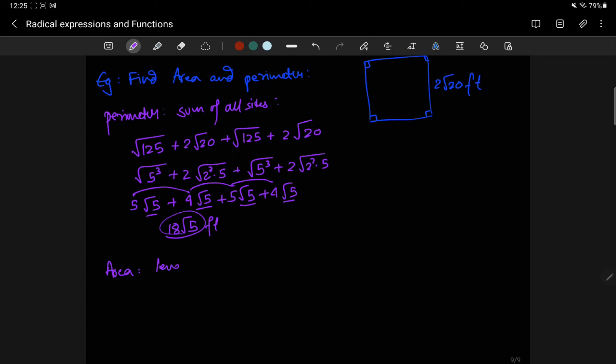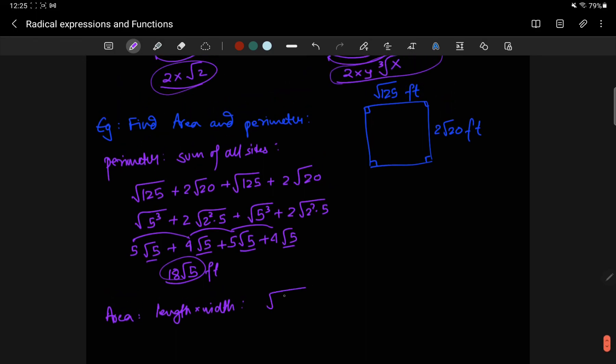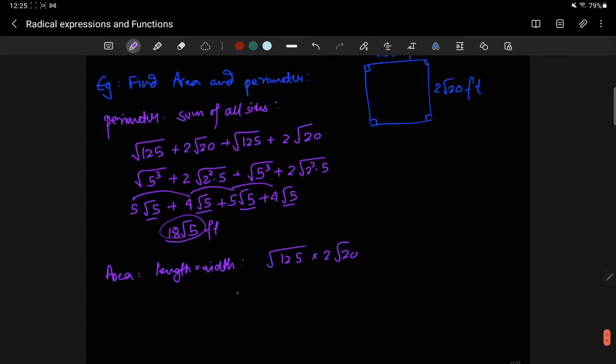Area is going to be length times width, which is going to be root 125 times 2 root 20. So, I already have a 2 outside, I keep it outside, and I have 5 cubed and a 2 squared times 5, which becomes 5 to the 4 times 2 squared. 5 to the 4 means there are 2 pairs. So, I can actually pull out a 5 squared and 1 copy of 2. So, the area is 25 times 4 is 100 square feet.